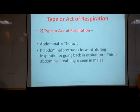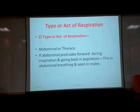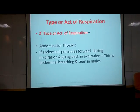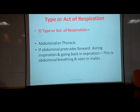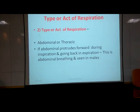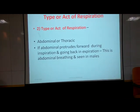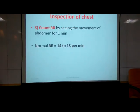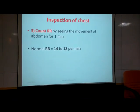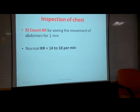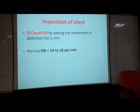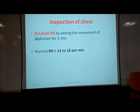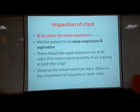We will observe the type of respiration — whether it is abdominal or thoracic. Mr. Satish Kade is a male volunteer, so in males there is abdominal respiration; in females, there is thoracic respiration. We count the respiratory rate by observing the protrusion of the abdomen and checking it for one minute. The normal count is 14 to 18 per minute.